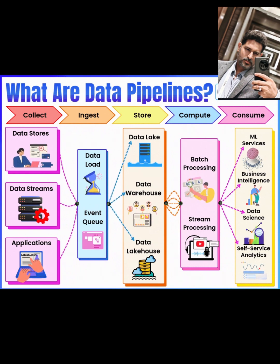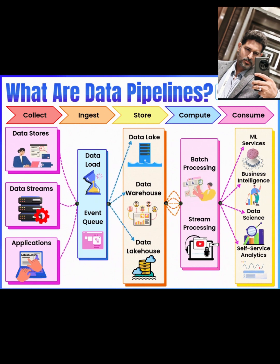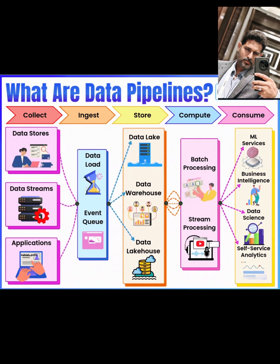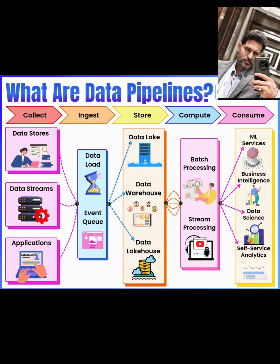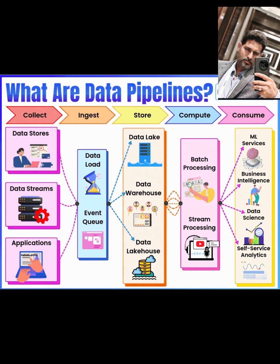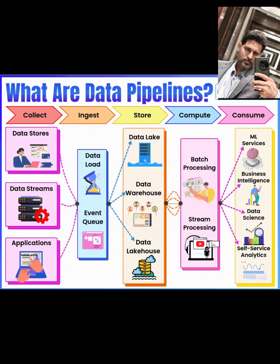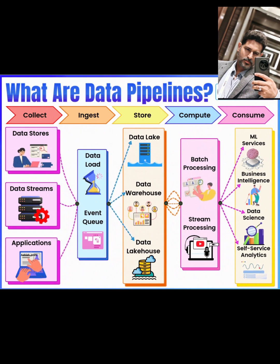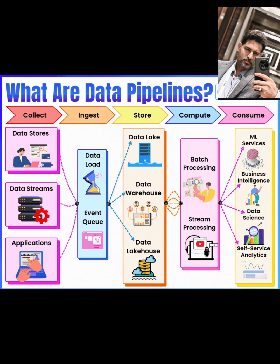Stage four: Compute. Now we move to compute, the stage where the magic of processing happens. Compute can happen in two modes: batch processing and stream processing. Batch processing involves processing large volumes of data at scheduled intervals. Tools like Apache Spark or Hadoop MapReduce are ideal here, reading data from your data lake or warehouse and applying transformations.